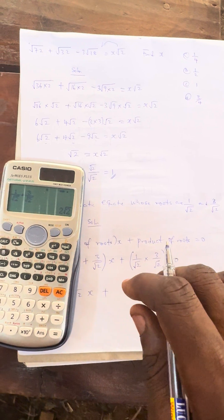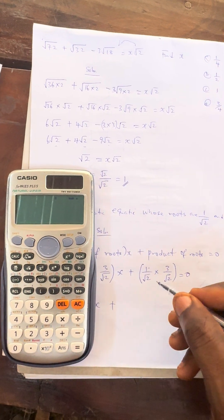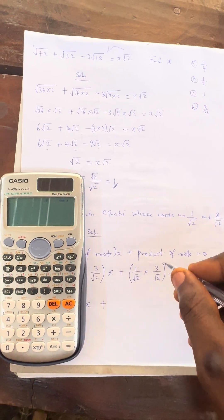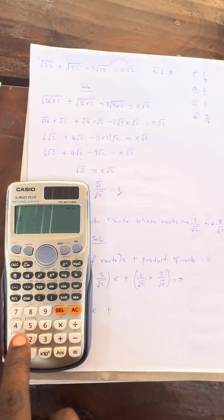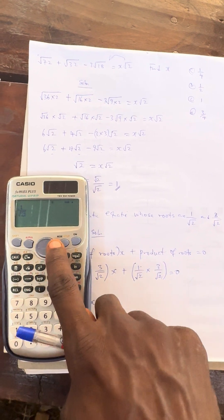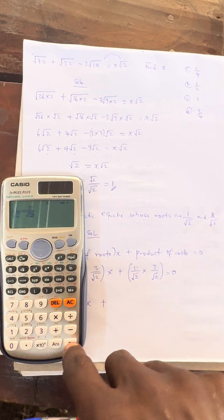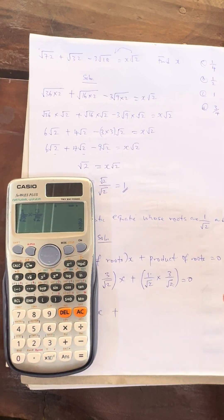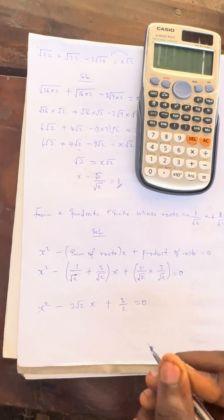Plus the product. The product means we are going to multiply. If you multiply, 1 × 3 is 3, then 2 × 2 is 2. This gives us 3/2. But let's place it on the calculator: 1/√2 × 3/√2. What's the answer? Can you see, 3/2. So you have this to be 3/2.